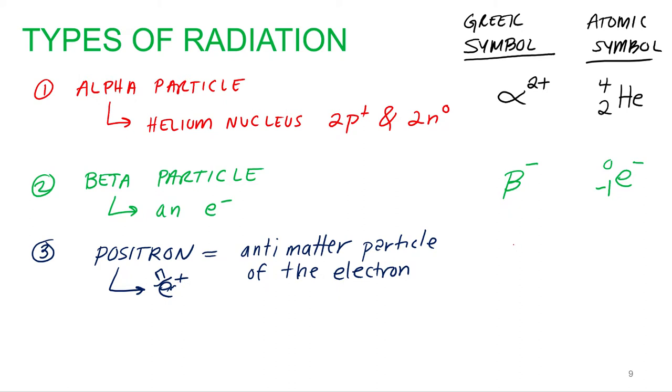So what's the Greek symbol for a beta particle? It is beta, but positive. So you can differentiate between the beta particle, electron, and the positron. And for its atomic symbol, it is an electron with a positive charge. We put a zero and a plus one for its atomic number.